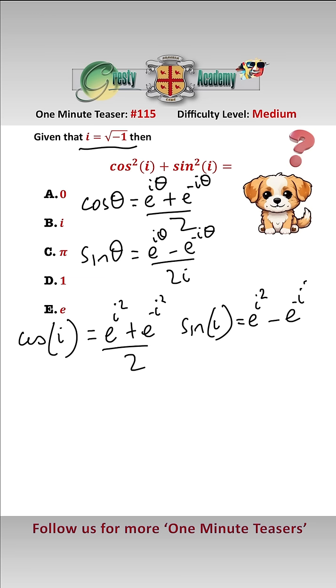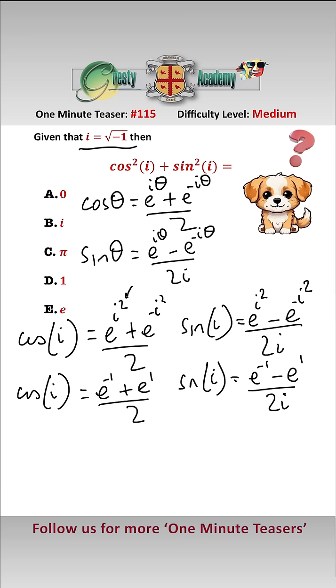i squared is minus 1, so therefore we can simplify that as cos i equals e to the minus 1 plus e to the 1 over 2, and sin i is e to the minus 1 minus e to the 1 over 2i.